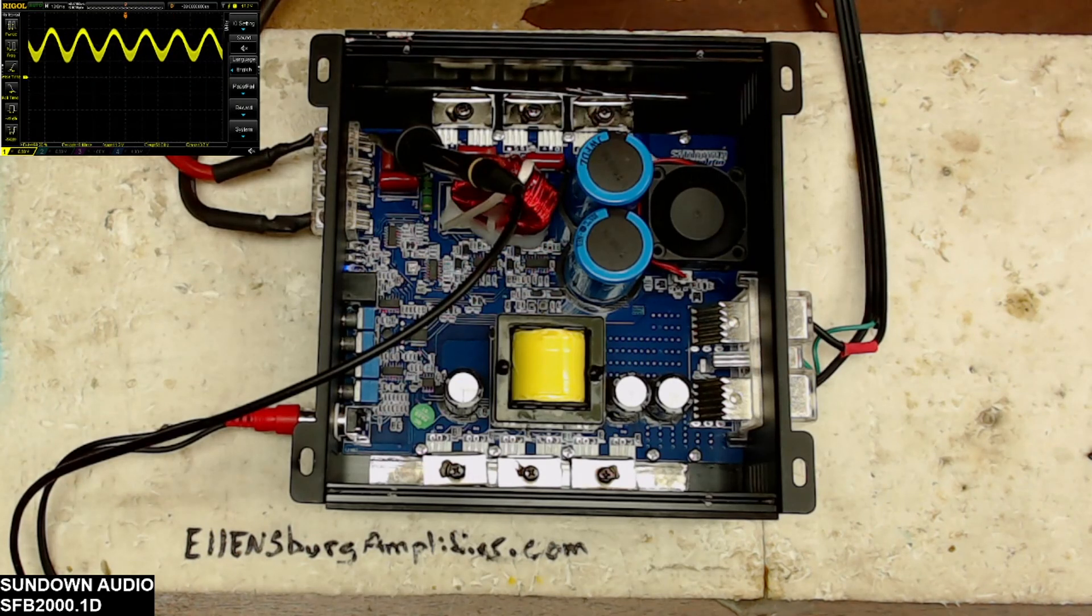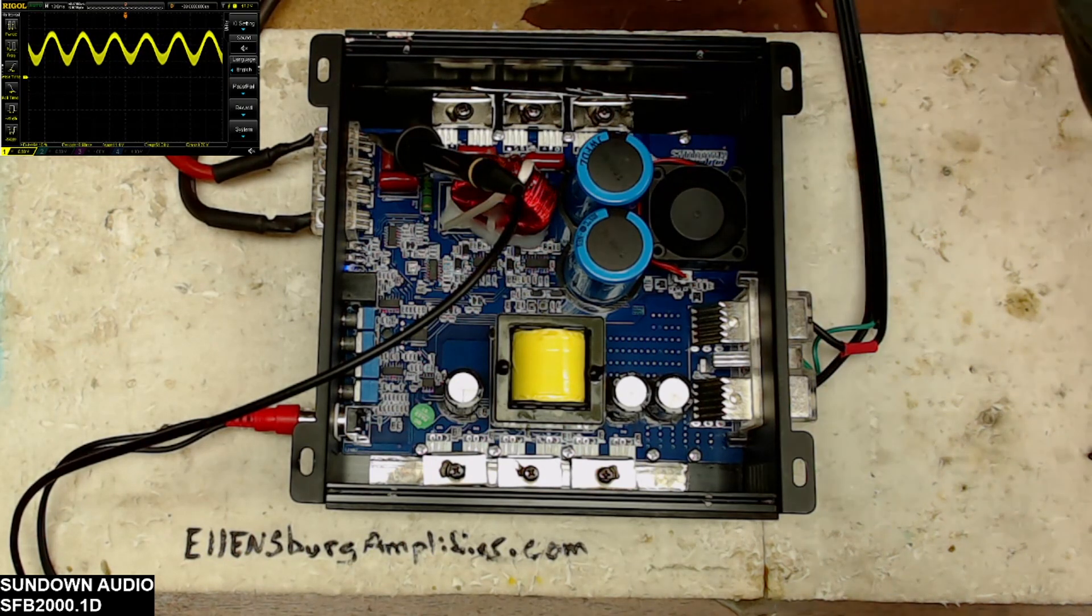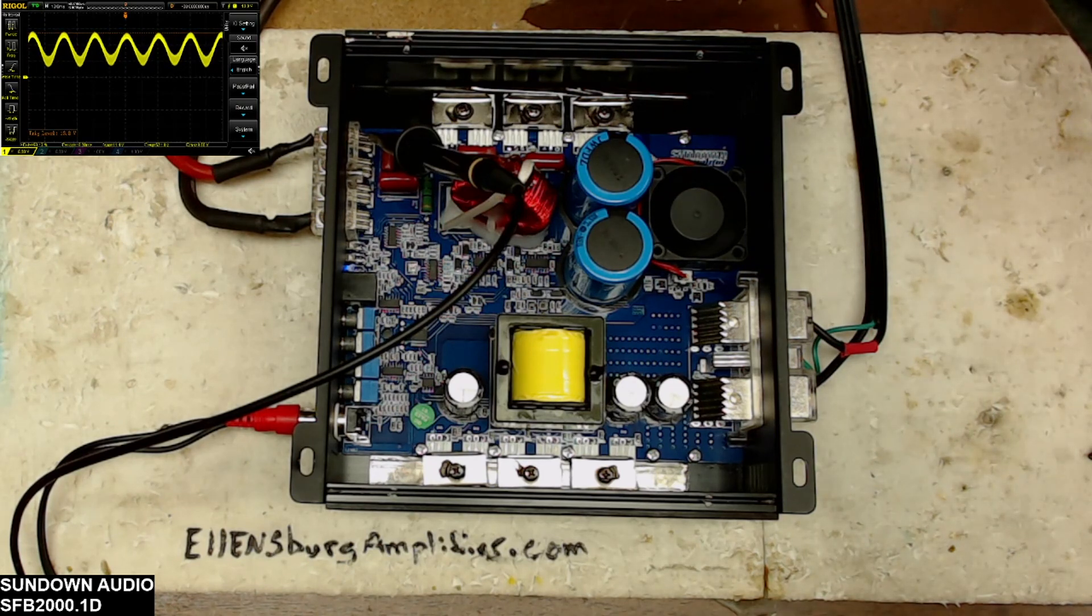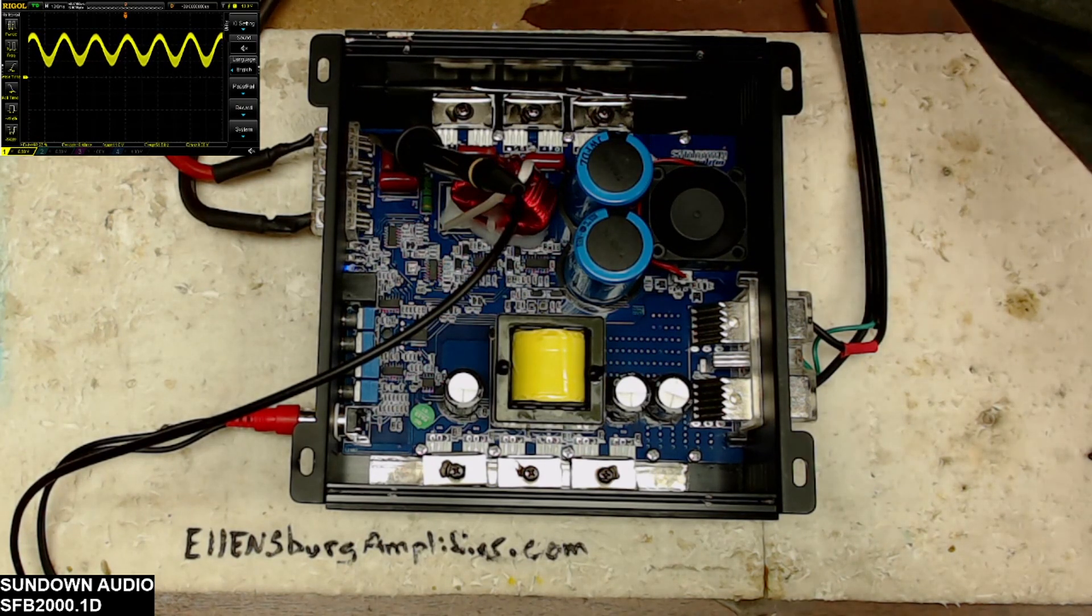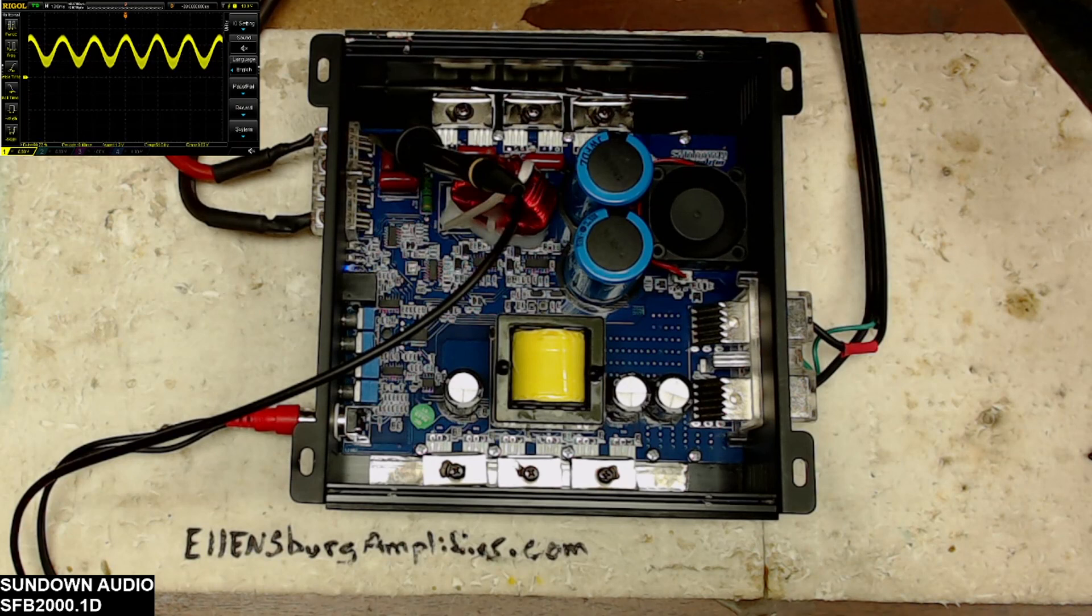All right, so I got this reinstalled back into the heat sink and I got a two ohm load hooked up and a 50 hertz signal going in. There's your 50 hertz output, so Daniel, your amplifier is up and running again. I'm going to get it load tested and we'll get this back on the road to you.